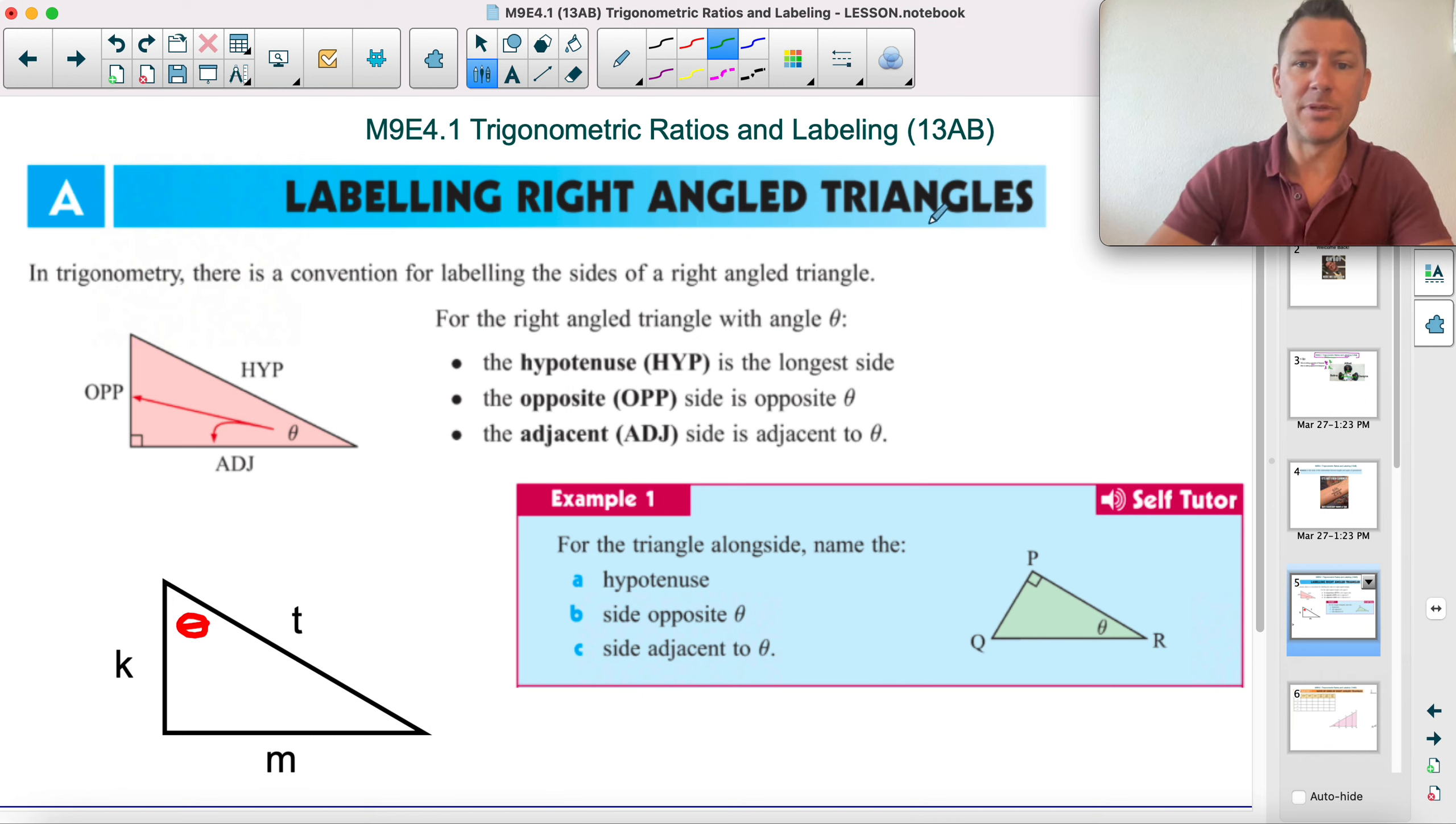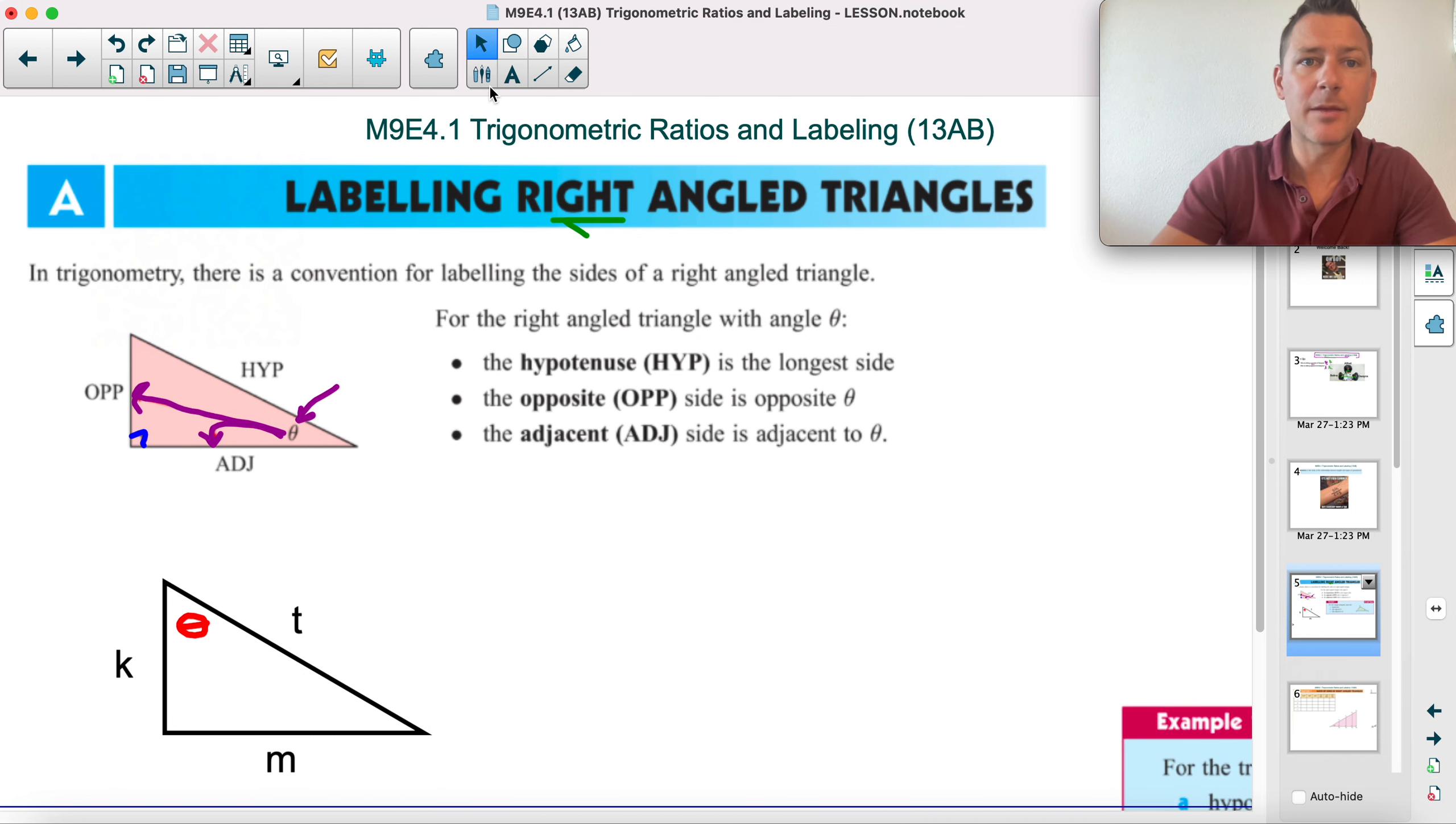In A, we're just interested in labeling right-angled triangles. We'll deal with non-right-angled triangles later. If this is the angle we're interested in, this side is opposite, it's across from, and this side is adjacent, it's next to. And the hypotenuse is always the longest one. You can tell the longest one is always across from the 90-degree angle.